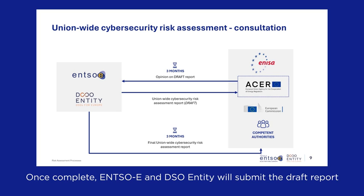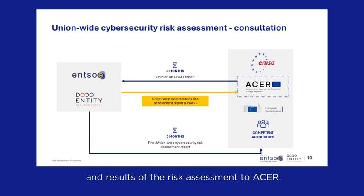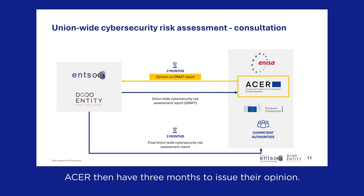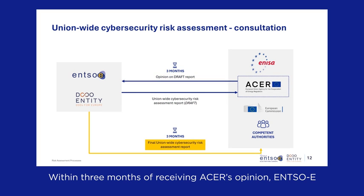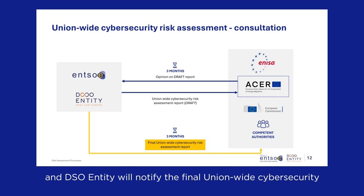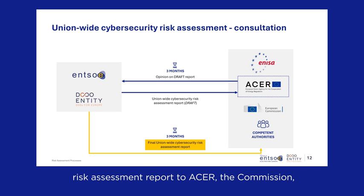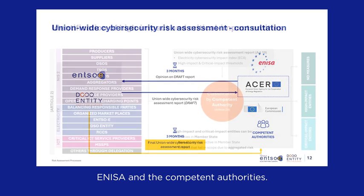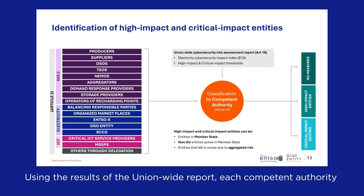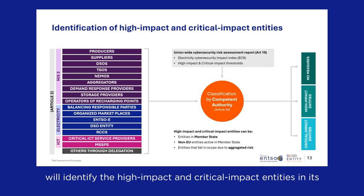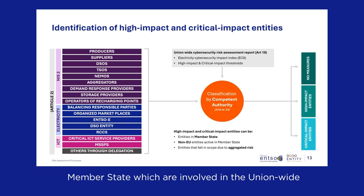Once complete, ENTSOE and DSO Entity will submit the draft report and results of the risk assessment to ACER. ACER then has three months to issue their opinion. Within three months of receiving ACER's opinion, ENTSOE and DSO Entity will notify the final union-wide cybersecurity risk assessment report to ACER, the Commission, ENISA, and the competent authorities. Using the results of the union-wide report, each competent authority will identify the high-impact and critical impact entities in its member state which are involved in the union-wide high-impact and critical impact processes.